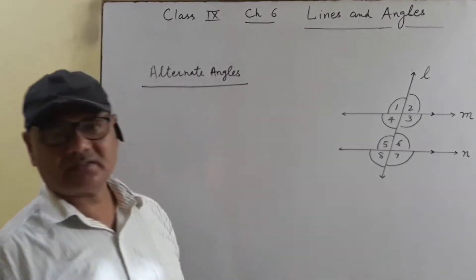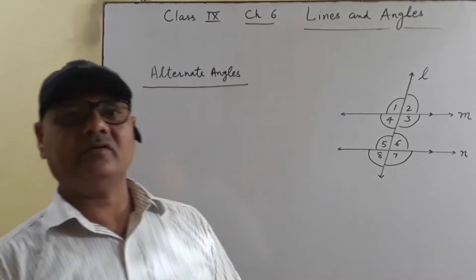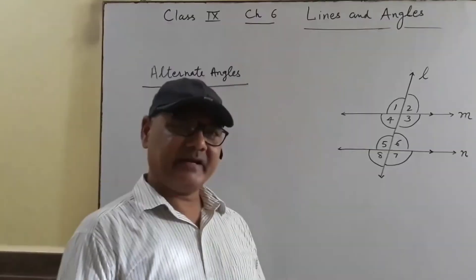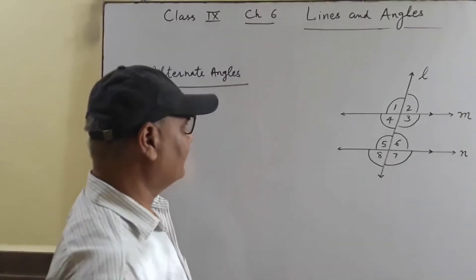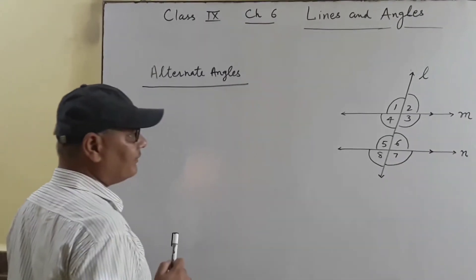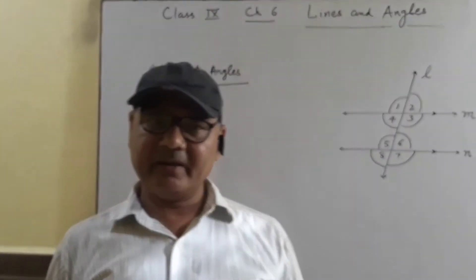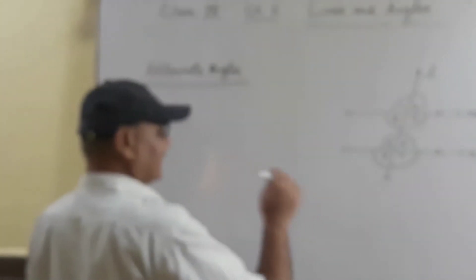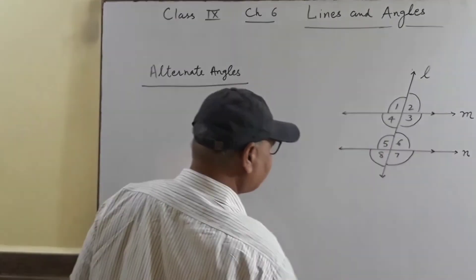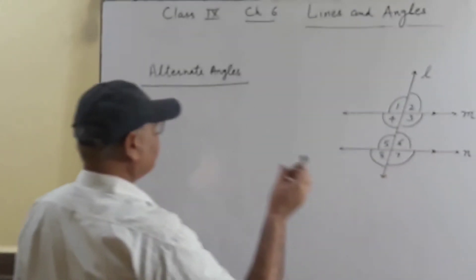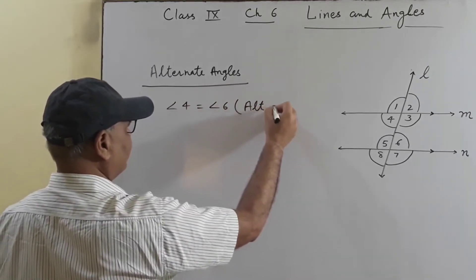Then come Alternate Angles. Alternate angles are always equal when lines are parallel. If lines L and M are parallel, the alternate interior angle formation means the exterior angle stays exterior and interior stays interior, but the side changes. For example, angle 4 and angle 6 are alternate interior angles, and since the lines are parallel, angle 4 is equal to angle 6.